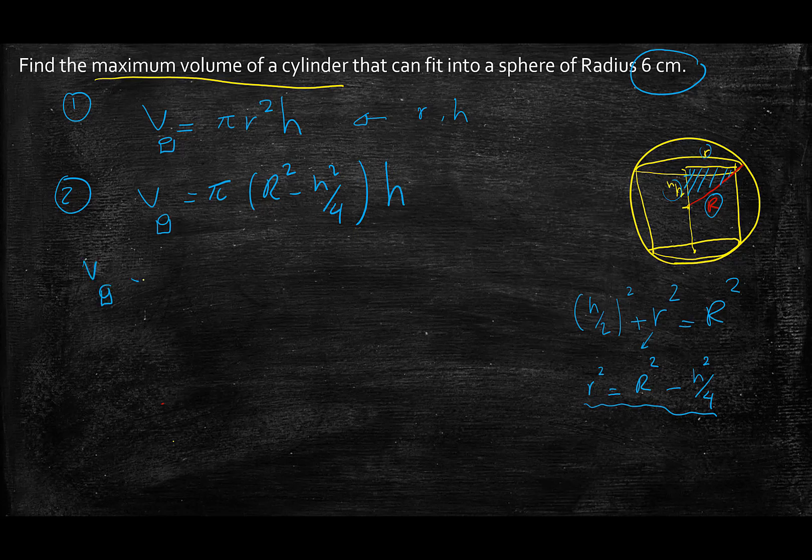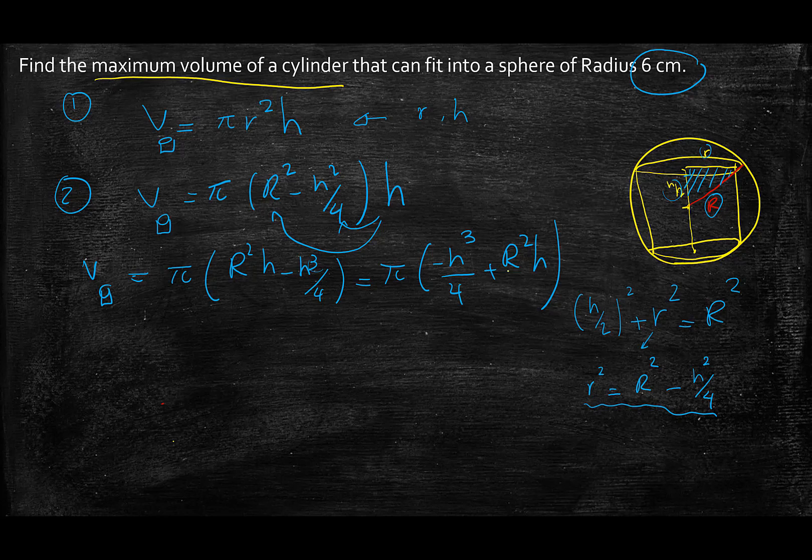Now in order to clean this up a little bit, I'm going to expand h into this equation and I'm going to get π times (R²h - h³/4). I like to write the biggest power first, so I'm going to rearrange this. That's my volume equation, and if I plug in my data here I will have V = π(-h³/4 + 36h).